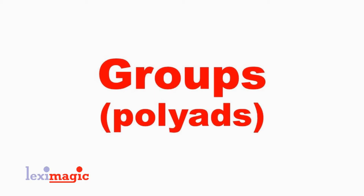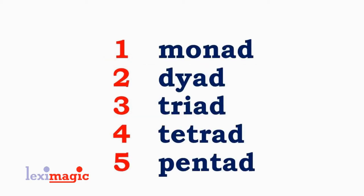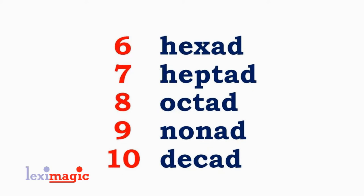Then we have different words describing groups or polyads. A group of one is a monad. A group of two is a dyad. A group of three is a triad. Four: tetrad. Five: pentad. Six: hexad. Seven: heptad. Eight: octad. Nine: nonad. And ten: decad.